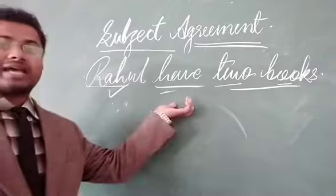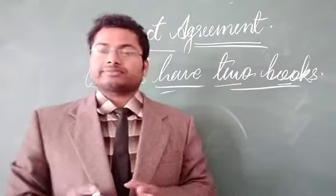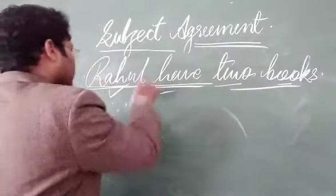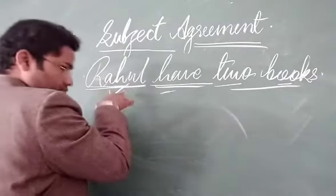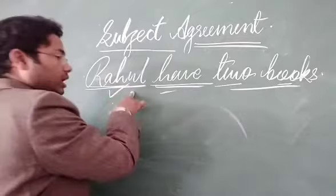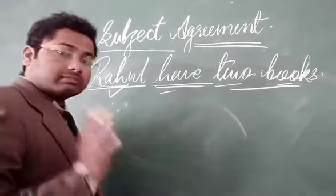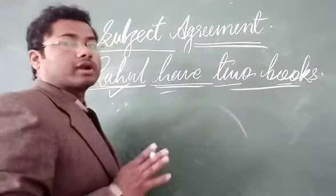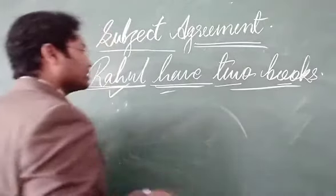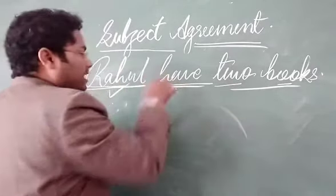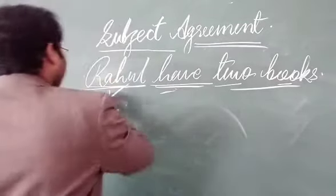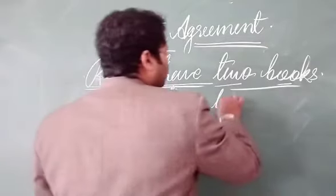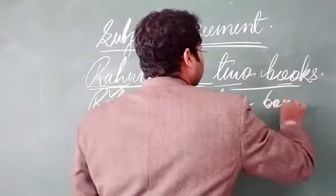Can we find an error in this sentence? If the number of the subject is plural, 'have' will be correct. But Rahul is a singular noun, so it will accept a singular verb, and similarly 'has' is used at the place of 'have.' So, Rahul has — not have — has two books.